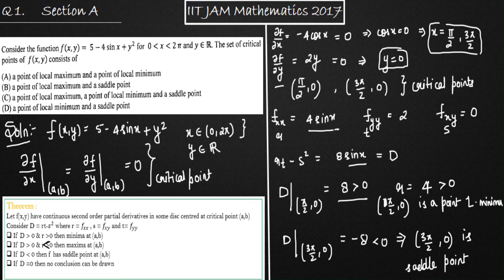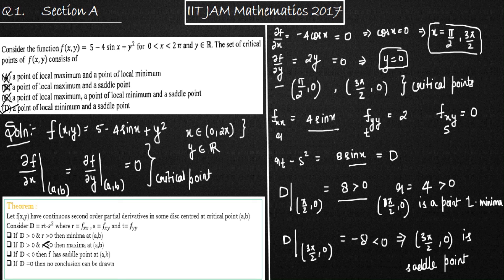Option A says a point of local maxima and a point of local minima — incorrect, we are not getting a local maximum. Option B is also incorrect for the same reason. Option C says a point of local maxima and minima — also incorrect. Option D says a point of local minima and a saddle point — therefore D is correct. This is a four to five line question and you can solve it in about two minutes in your exam. Thank you.